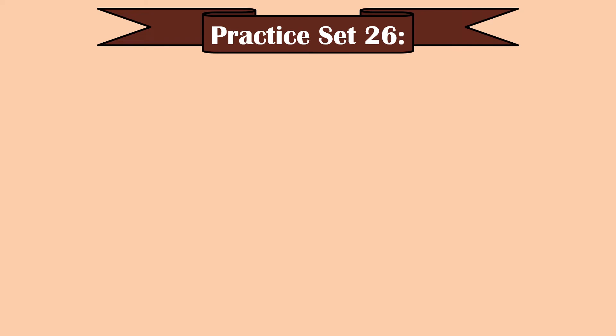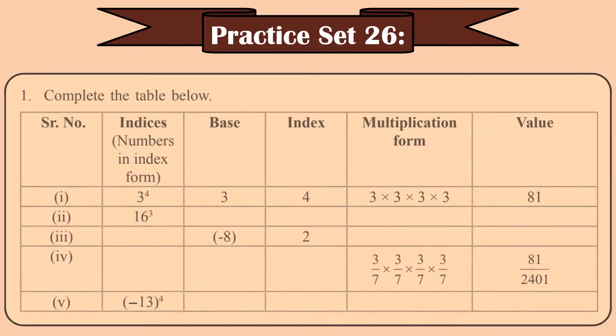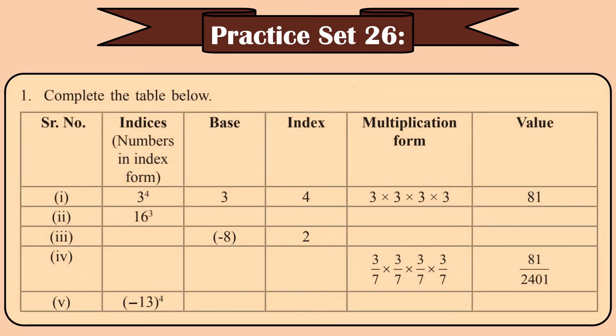Moving on to Practice Set 26. We'll apply the concept we learned in our sums. Sum number 1 asks you to complete a table where you have columns for indices, base, index, multiplication form, and value. There are a few missing columns you need to fill in. The first one is already solved for you.